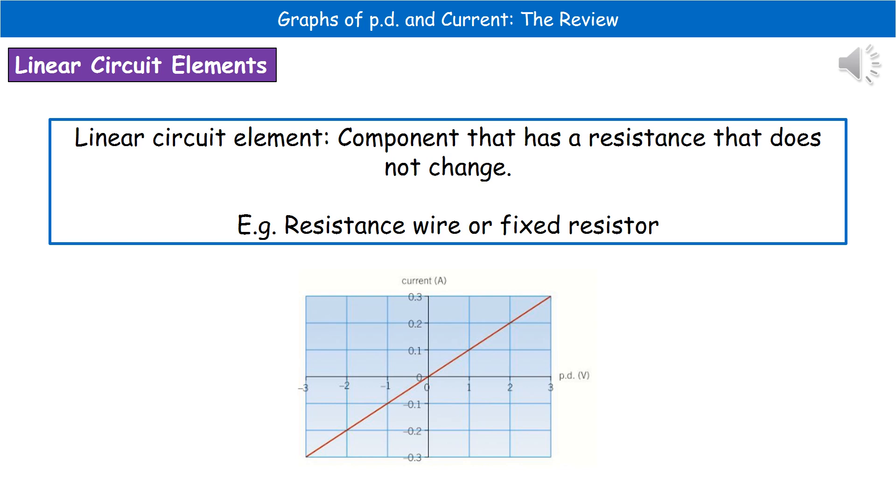The first type of component we're going to look at are what are called linear circuit elements. These are components that have a resistance that doesn't change. A couple of examples would be a piece of resistance wire or a fixed resistor. The characteristic graph for one of these linear circuit elements is a diagonal line. It passes through the origin at 0,0, but it is that straight line that's the key thing. That's how you can identify the linear circuit element.